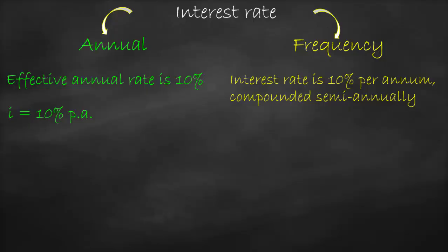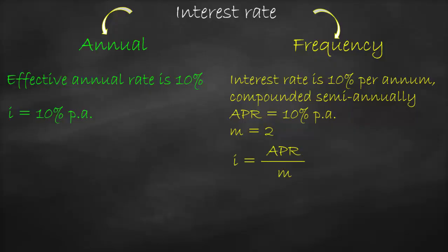Interest rate is usually expressed as an annual number, but this doesn't mean it should be paid or received annually. In this example, the interest rate is 10% per annum — this is called the annual percentage rate (APR) equal to 10%. But payment is required every semi-annual, every six months. Since there are two six-month periods per year, m equals 2. Therefore, the periodic interest rate i equals APR divided by m, which is 10% divided by 2, giving us 5% per semi-annual period.